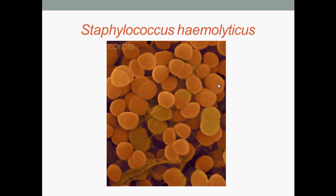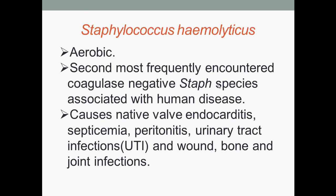Staphylococcus haemolyticus under microscopic view. Staphylococcus haemolyticus are aerobic. They are the second most frequently encountered coagulase negative Staphylococcus species associated with human diseases. They cause native valve endocarditis, septicemia, peritonitis, urinary tract infections, and wound, bone and joint infections.